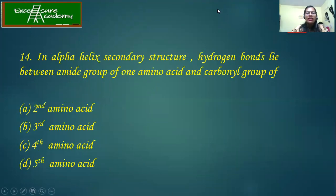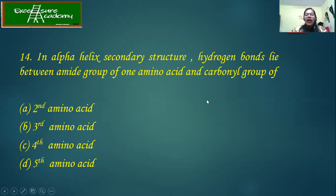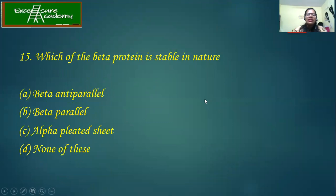In alpha helix secondary structure, the hydrogen bonds lie between the amide group of one amino acid and the carbonyl group of which amino acid? Just as mentioned, it is the first amino acid to the fourth amino acid. So here the answer is C — the fourth amino acid. The hydrogen bond is formed between the first and the fourth amino acid in the alpha helix.